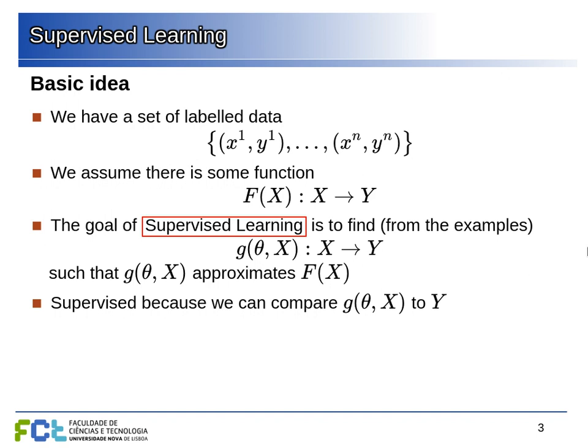We don't know what F is, but we assume it exists. The goal of supervised learning is to find an approximate function G that takes in all the features of each example — the matrix X with all the vectors — and also these parameters, this vector theta that we can adjust. We can hopefully adjust these parameters so that G(theta, X) is close to F(X), giving us the same relation we want to figure out.